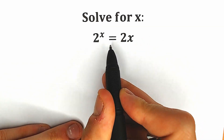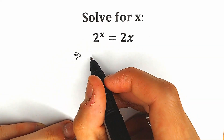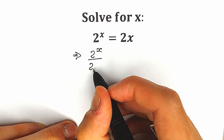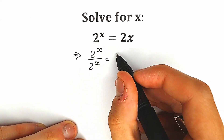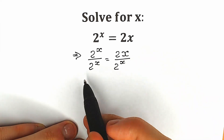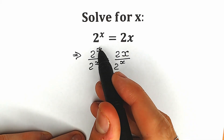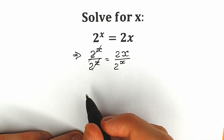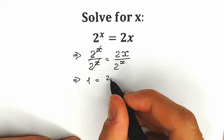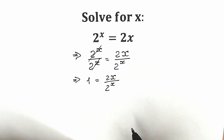First of all, I'm going to divide both sides by 2 to the power x. Our first step is to divide both sides by 2 to the power x. So we have our left side, 2 to the x, divided by 2 to the x, equal to 2x divided by 2 to the power x. On the left side we have the same numerator and denominator, so we can easily cancel this. Right here we have only 1 on the left side, so as a result we have 1 equal to 2x over 2 to the power x.